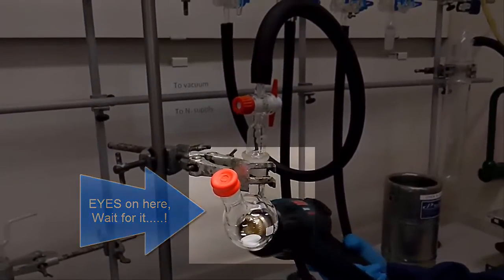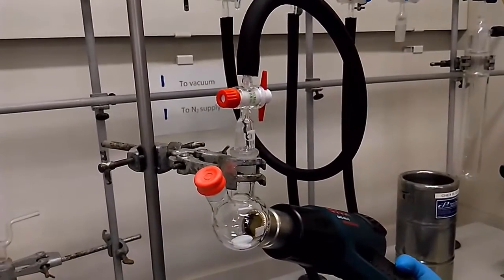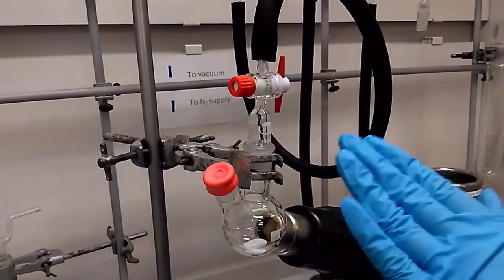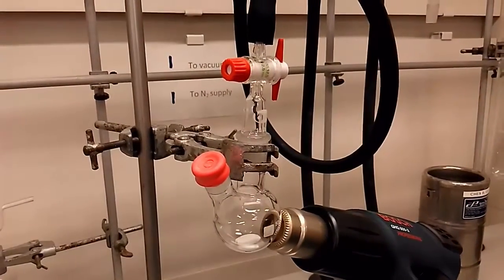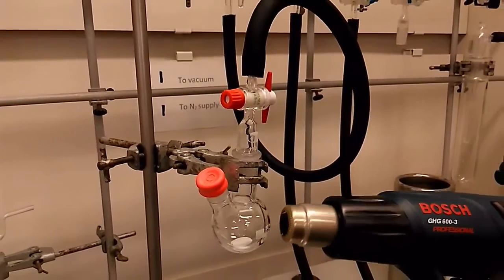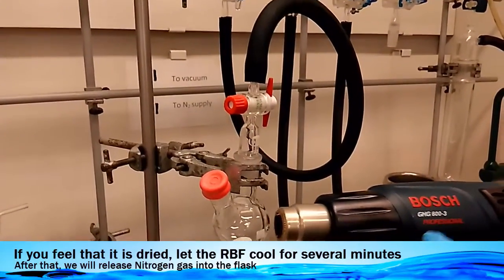See that? Wow. It's bright. Typically if we have some moisture, you can see some moisture being condensed near the glass joint. So now we have the dry RBF and it's under vacuum. We need to let it cool for a few minutes, and then we will refill with nitrogen gas.